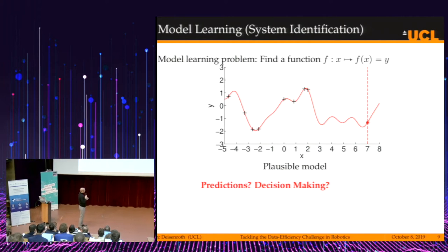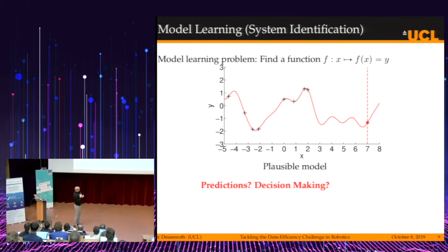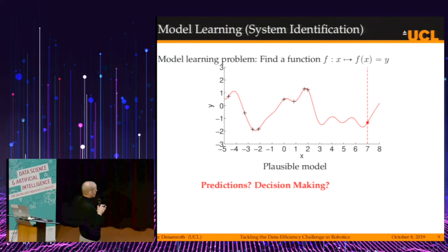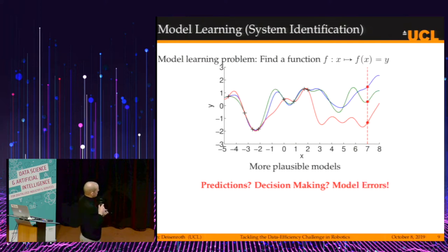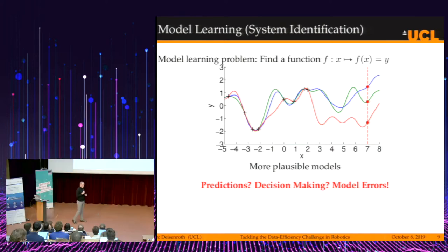If I query this model at x equals 7, it will predict some value around minus 1. We can take this value and make a decision. The problem is — if we have a robot driving along a cliff and the decision is to turn left, that may or may not be good. There isn't much evidence this is the right function to fit, and we can solve this regression problem in many other ways. All three functions connect the data points, but they give completely different predictions and therefore potentially different decisions.